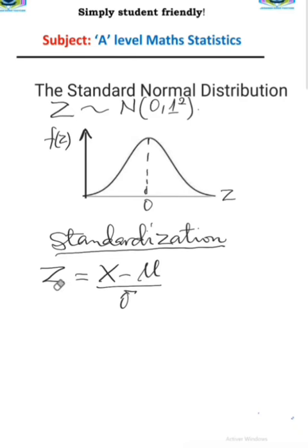It is important to interpret what the Z-score stands for. X minus mu is the distance from the mean to the observation x, and when you divide by sigma you are converting that distance into standard deviation units. So any Z-score tells you the number of standard deviations that your observation is away from the mean. If a Z-score is positive, say 1, the observation is one standard deviation to the right of the mean and is greater than the mean. A Z-score of negative one means the observation is to the left of the mean and less than it.